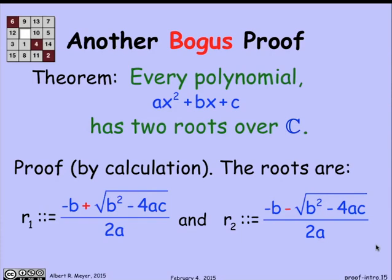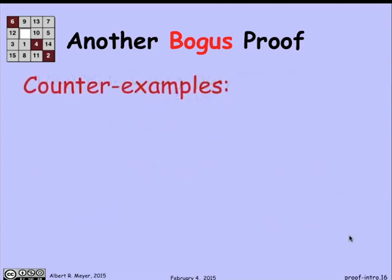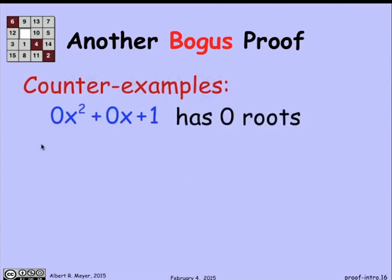Well, that's not true. We haven't proved it. This is a proof by calculation that has problems. What's the problem? Let's look at a counter-example: the polynomial 0x² + 0x + 1 doesn't have any roots. It's just a constant 1, which never crosses the origin, so it's got no roots.